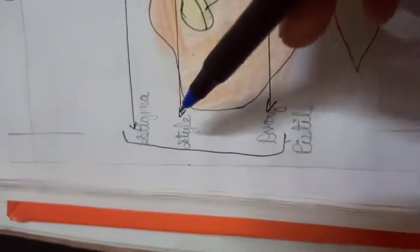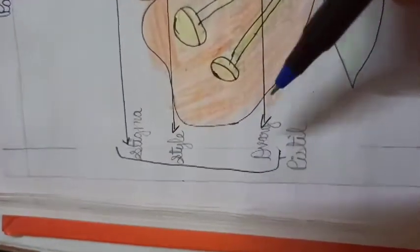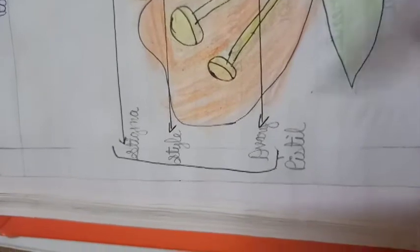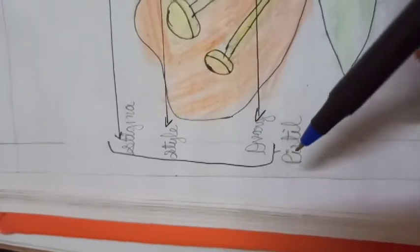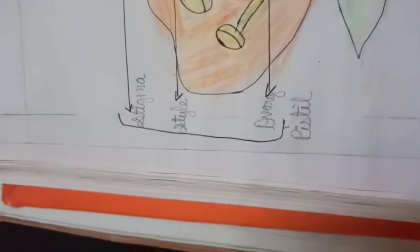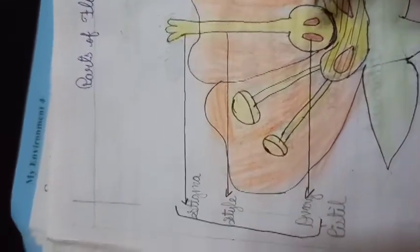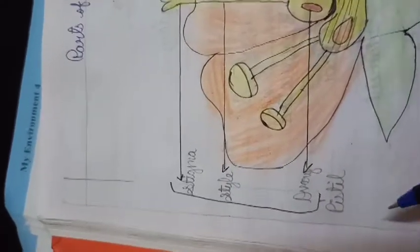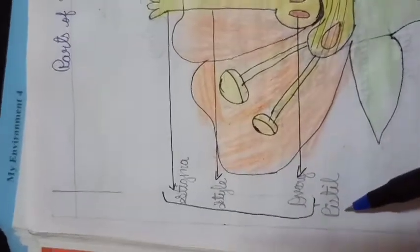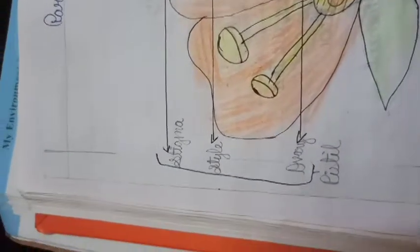And children, these three parts, just like stamen, these three parts are coming under a single word, pistil. Means pistil has these three parts. All the three parts comprises together to form a pistil. So children, about this,